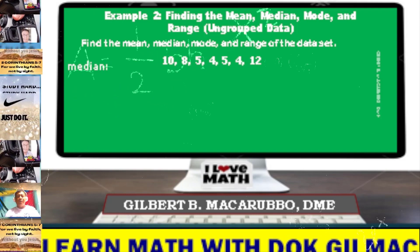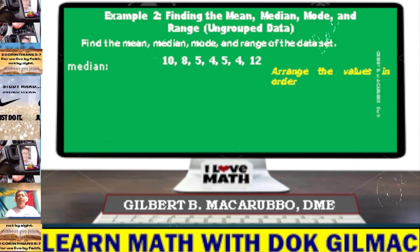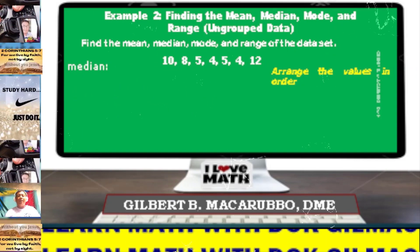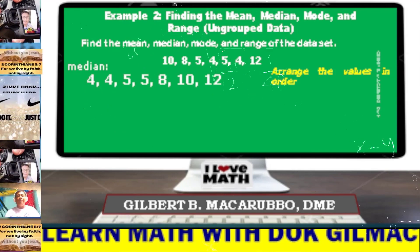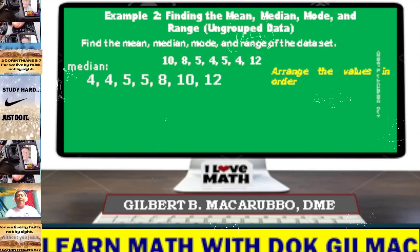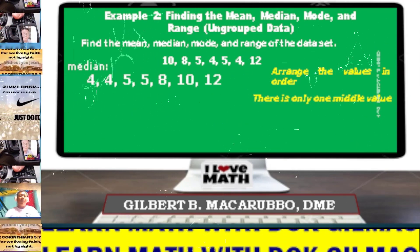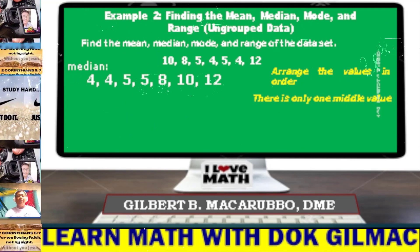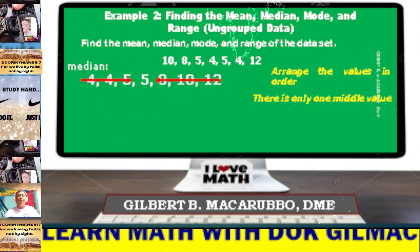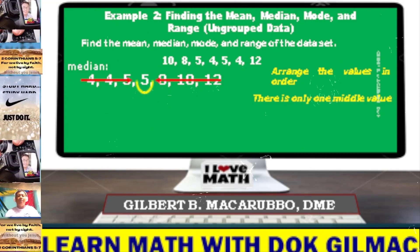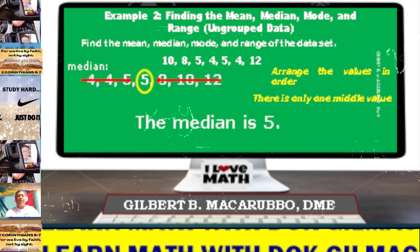This time we determine the median. Arrange the values in order: 4, 4, 5, 5, 8, 10, and 12. There is only one middle value. As you can see, 5 is the middle value. Therefore, the median is 5.